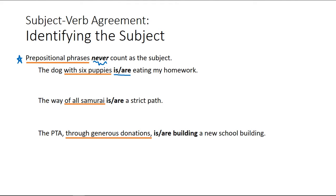So the first thing is, let's try this example. The dog with six puppies is or are eating my homework. Well it could be a little confusing to pick your subject, but if you know you can eliminate a prepositional phrase, it makes it much easier. The dog is eating my homework versus the dog are eating my homework. Well this is a singular subject. So the dog is eating my homework. That sounds much smoother and that's the correct answer.